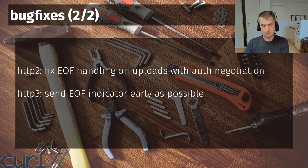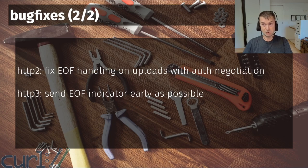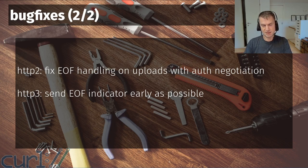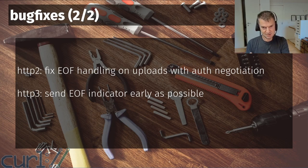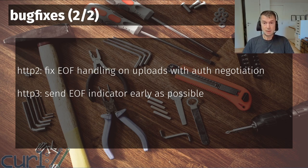We also fixed an HTTP/3 issue — or actually more of a quirk, since h3 is still experimental and not enabled by default unless you enable it in the build. In a POST request over HTTP/3, we could end up sending data and then sending a zero-length data packet after that, before the end-of-stream signal. Some receivers didn't like that extra zero-length data frame. It was completely unnecessary, so we fixed the counting to avoid that extra zero-length frame since all the data was already sent.